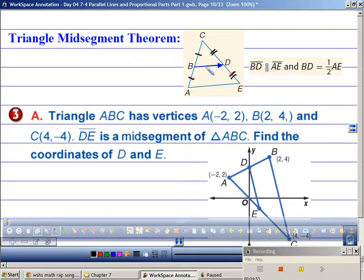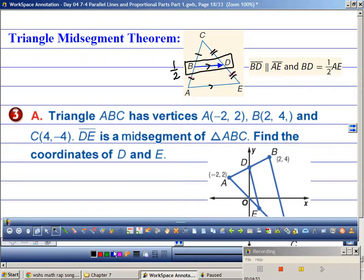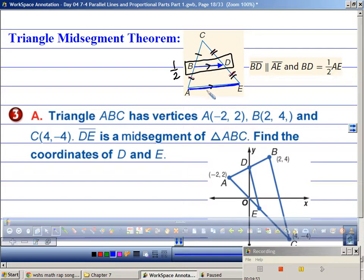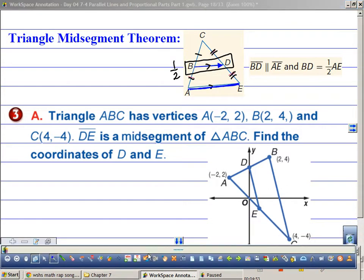So this says that if we have BD and AE parallel to each other, and BD is a midsegment, then BD, this segment right here, is half as long as this segment here. Makes sense, right? If it cuts the triangle in half, then the measure of this one is half as long as the base.